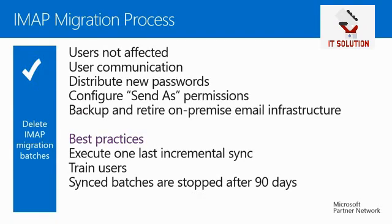Step 7 is the last step, where you delete the IMAP migration batches. After changing the MX records and verifying email is routed to Exchange Online, you are ready to delete the migration batch. Before doing so, verify that email is being sent directly to Exchange Online mailboxes, all users are using their Exchange Online mailboxes, full mailbox access and send-as permissions are properly configured, and that Exchange Online mailboxes have been synchronized at least once after mail began being routed directly to them.